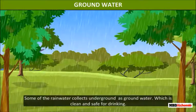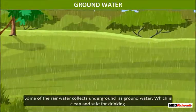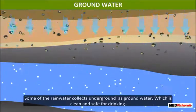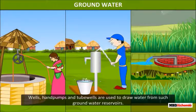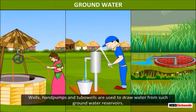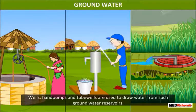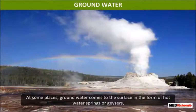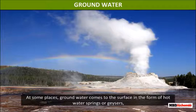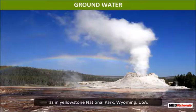Groundwater: some of the rainwater collects underground as groundwater, which is clean and safe for drinking. Wells, hand pumps, and tube wells are used to draw water from such groundwater reservoirs. At some places, groundwater comes to the surface in the form of hot water springs or geysers, as in Yellowstone National Park, Wyoming, USA.